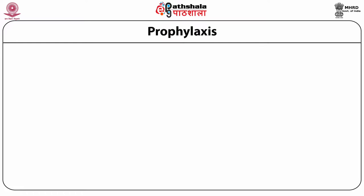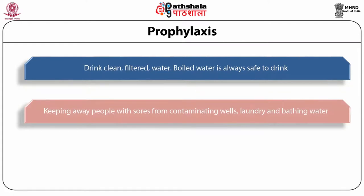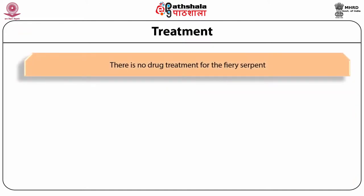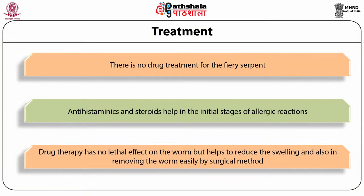Prophylaxis for Dracunculus medinensis includes drinking clean filtered water, as boiled water is always safe. Keep people with sores away from contaminating wells, laundry and bathing water. An important measure is to eradicate the vector cyclops by encouraging cyclops-eating fishes in ponds and streams used by people, or by chemical treatment of water. Antihistaminic drugs and steroids help only in the initial stages of allergic reactions. Drug therapy has no lethal effect on the worm but helps reduce swelling and aids in removing the worm by surgical methods.